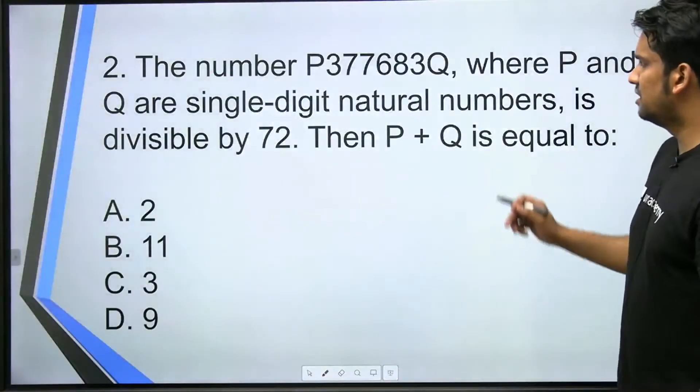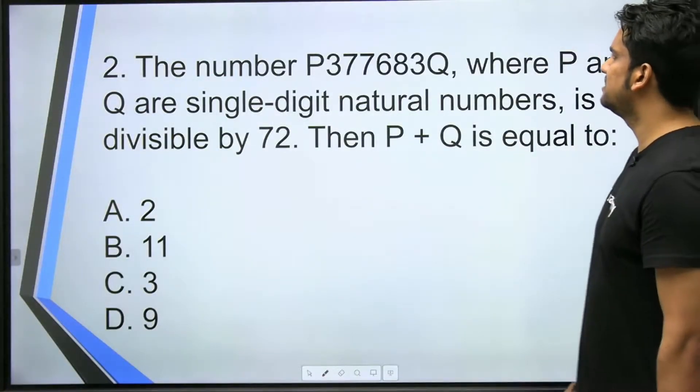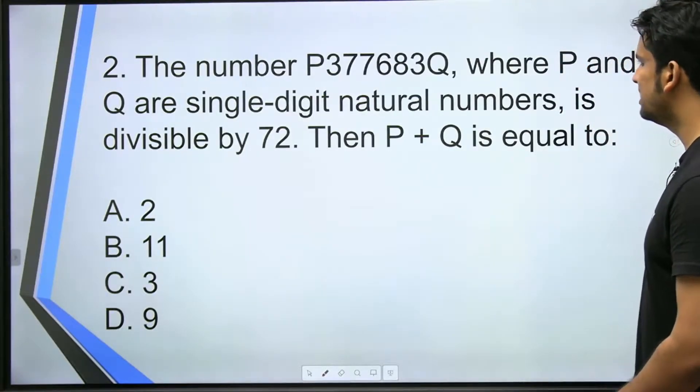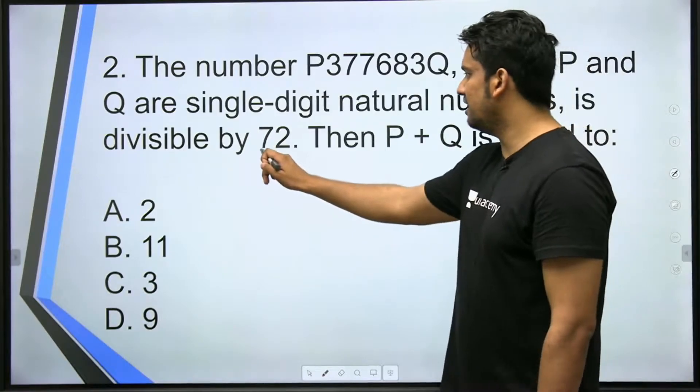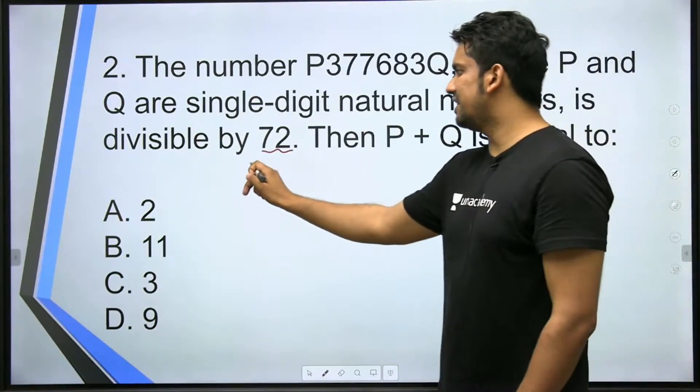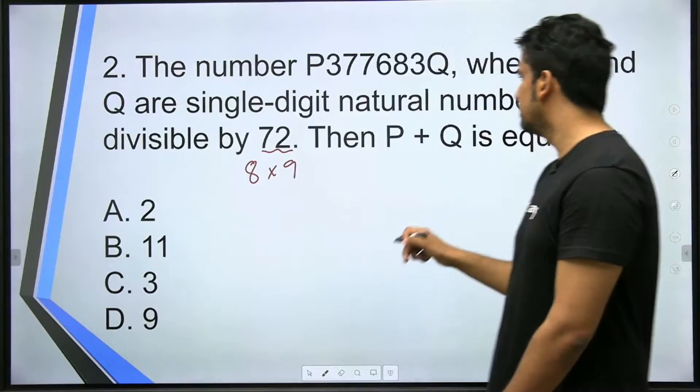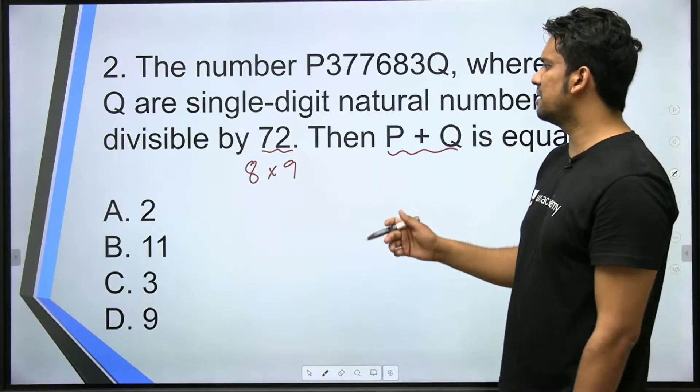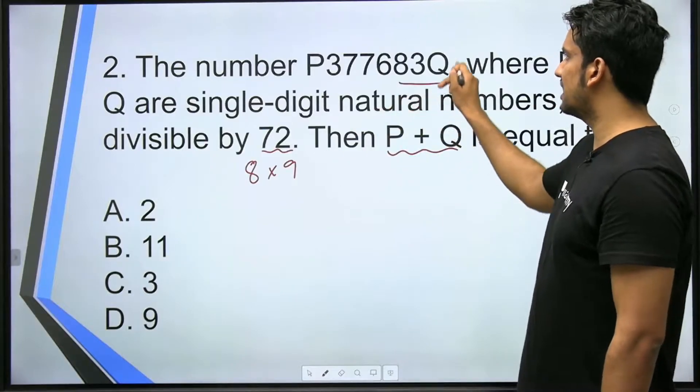Alright. Next question. The number P377683Q where P and Q are single digit natural numbers is divisible by 72. So again 72's divisibility rule is 8 into 9. So what is asked? Find the value of P plus Q. So similar approach.